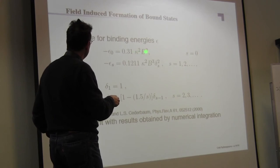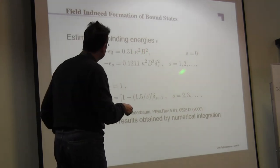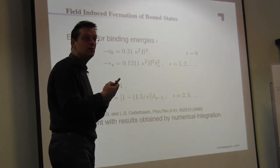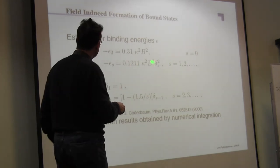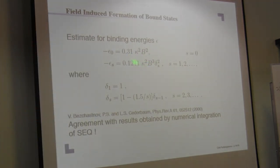So for S equal to zero, you have this kappa squared B squared behavior of the binding energy. And for S unequal zero, which means for non-zero angular momentum, you have this B to the third and kappa squared. Now these are all small numbers here.